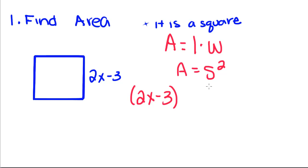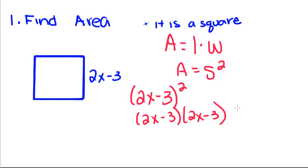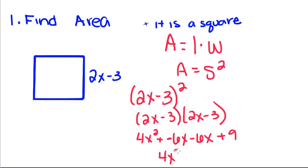We have to square out this binomial to get our area polynomial. When we square binomials, we write it as two binomials and FOIL it out. First: 2x times 2x is 4x². Outer: 2x times negative 3 is negative 6x. Inner: negative 3 times 2x is another negative 6x. Last: negative 3 times negative 3 is positive 9. So this gives us 4x² - 12x + 9.